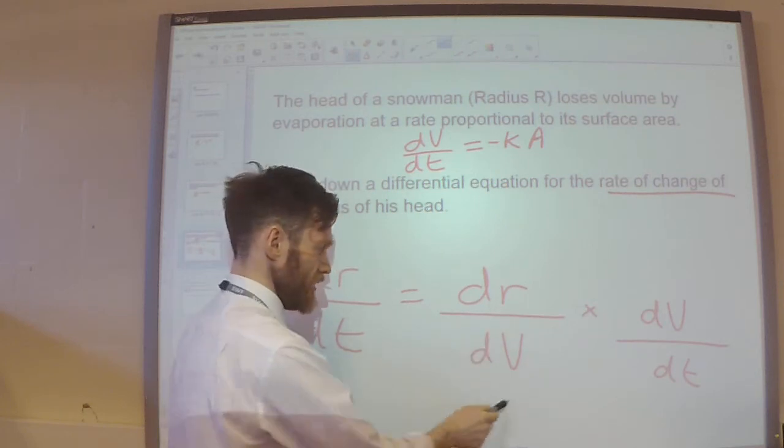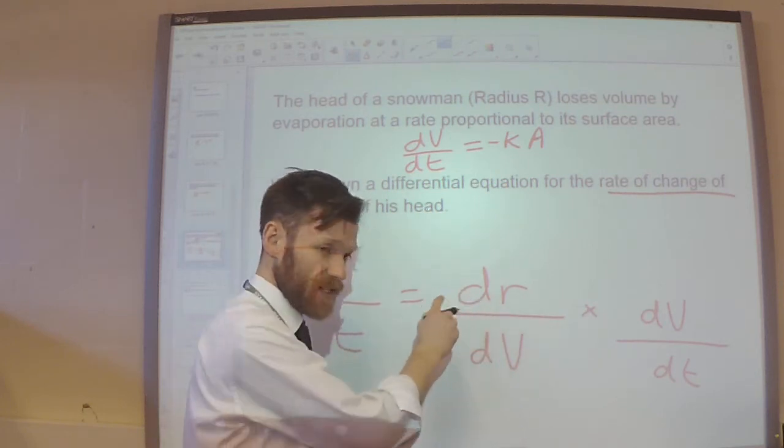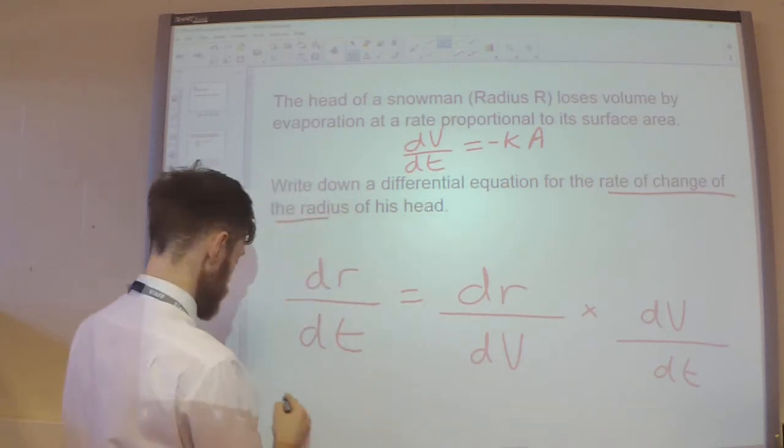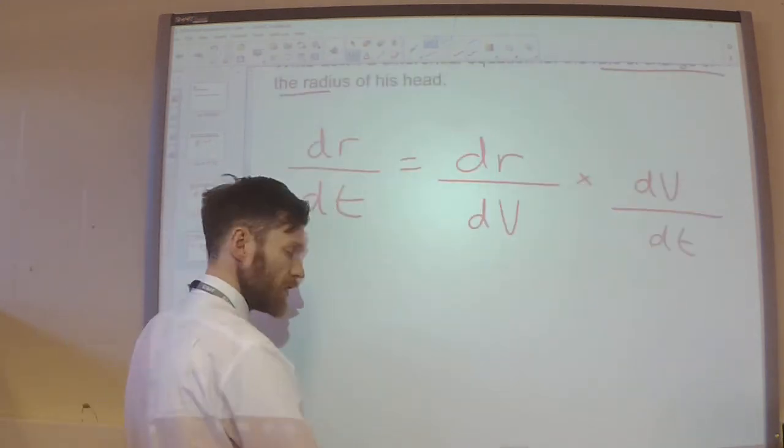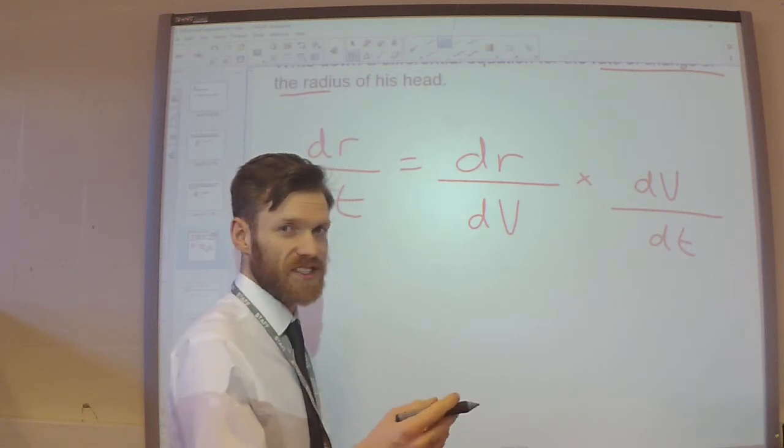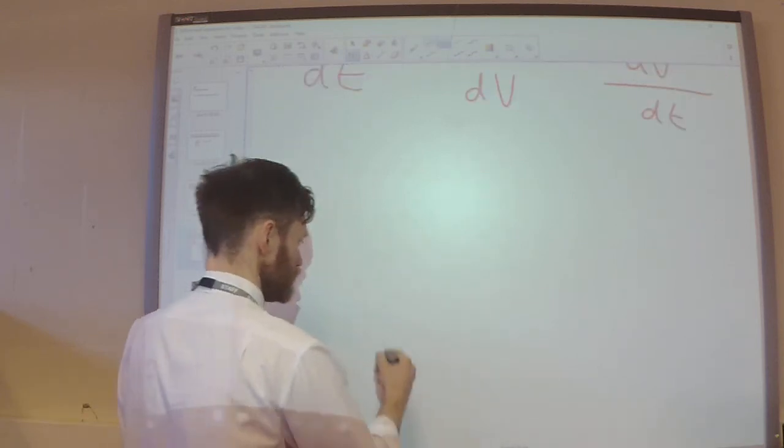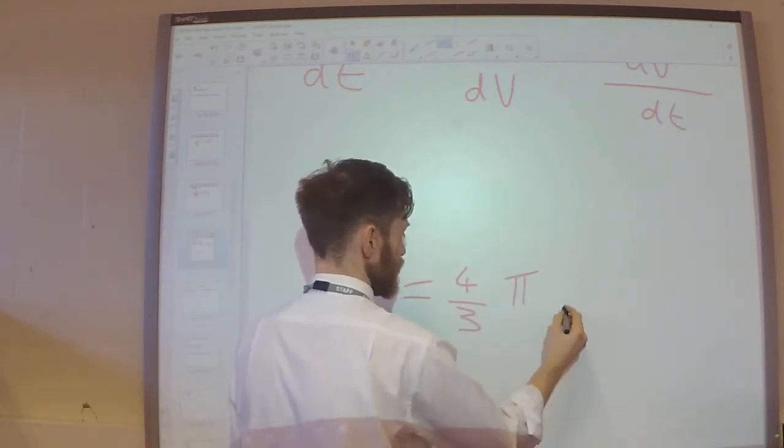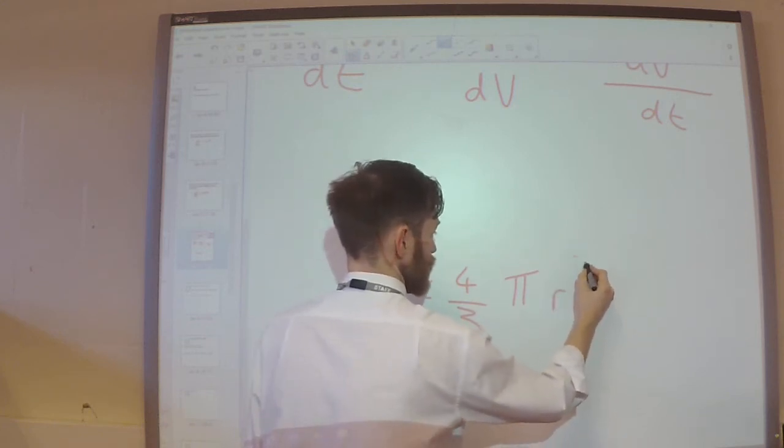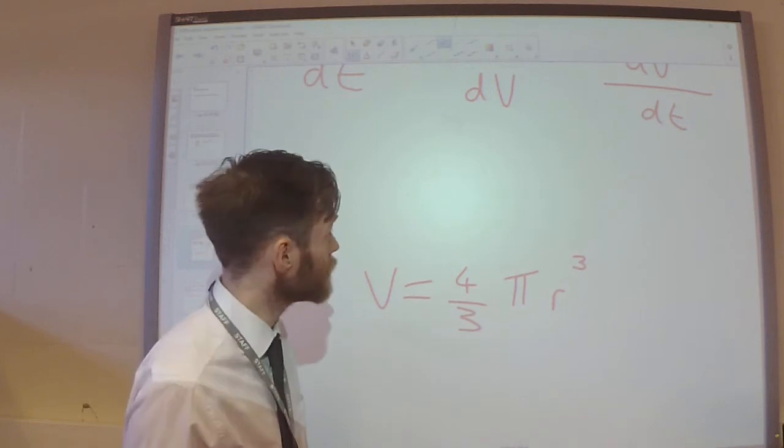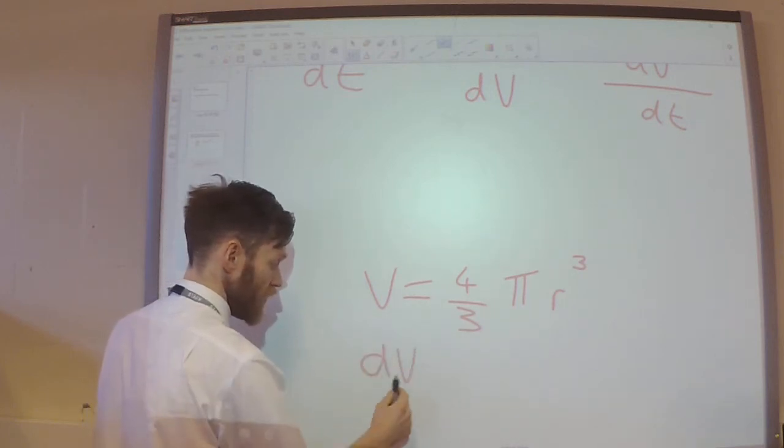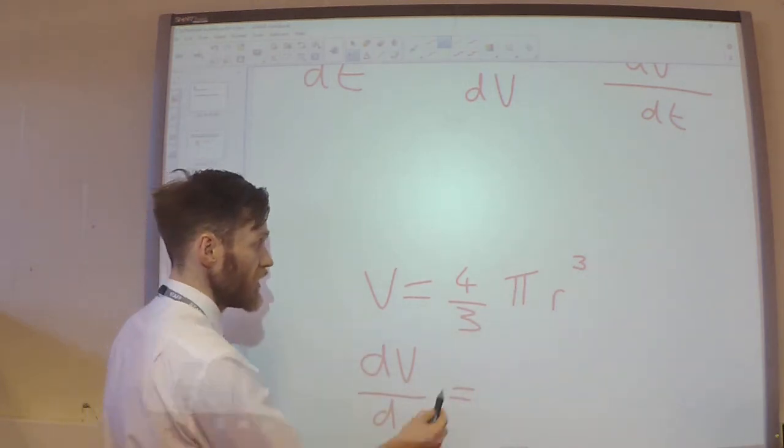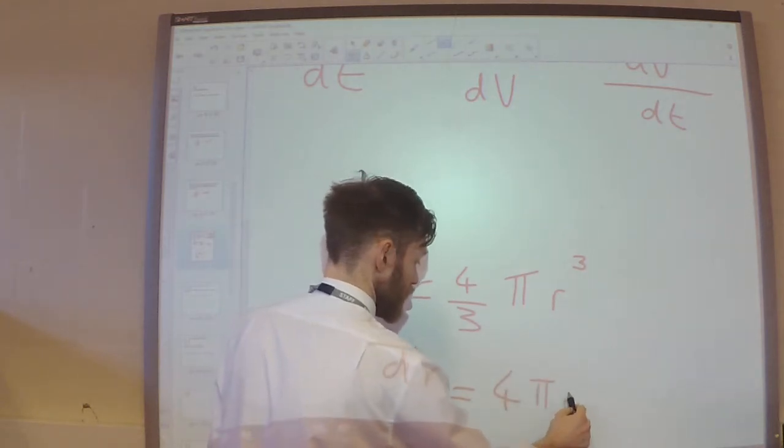Now, dr by dv, how is the radius of the snowman's head related to the volume? Well, let's assume that the snowman's head, let's say it's a sphere. So, the volume of his head would be four-thirds pi times the radius cubed. That's the volume of a sphere. So, the rate of change of the volume with respect to the radius, if I differentiate this with respect to the radius, I'm going to get four-pi-r squared.